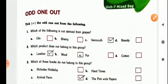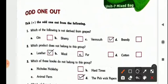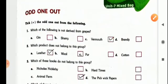Next is the odd one out. Now which of the following is not derived from grapes, so it is Vermouth, V-E-R-M-O-U-T-H.